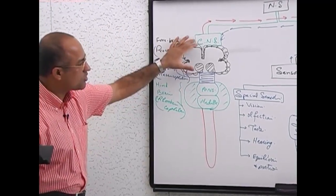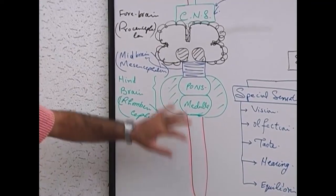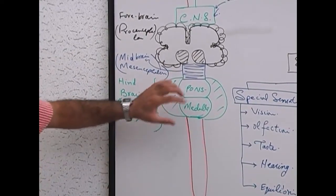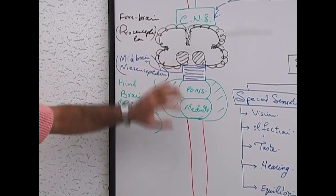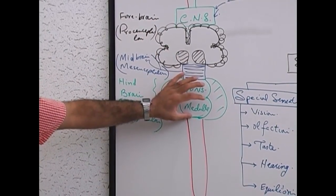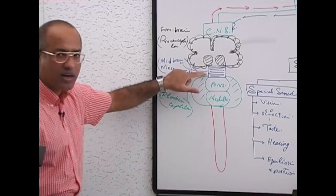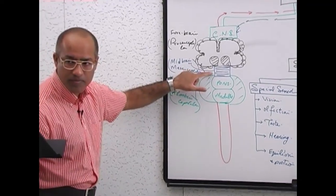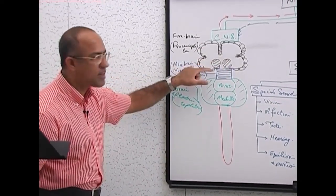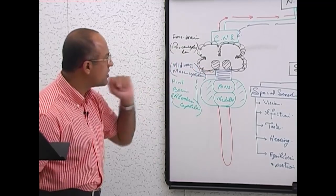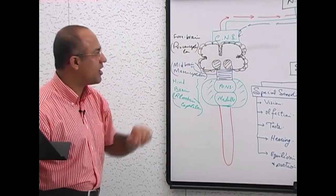Let me repeat: the central nervous system consists of brain and spinal cord. The brain has hindbrain, midbrain, and forebrain. The hindbrain is also called rhombencephalon, the midbrain is also called mesencephalon, and the forebrain is called prosencephalon.